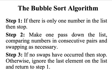Step two is really the key step: we work down a list of numbers, comparing the numbers in consecutive pairs. So we compare numbers one and two in the list, and if one is bigger than two, we swap them over. Then we compare numbers two and three, and if number two is bigger than three, we swap over, and so on.